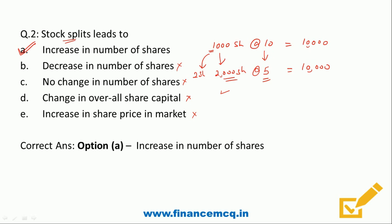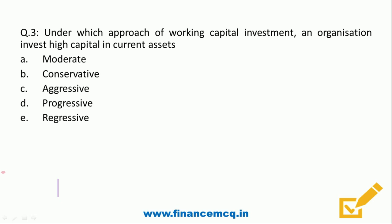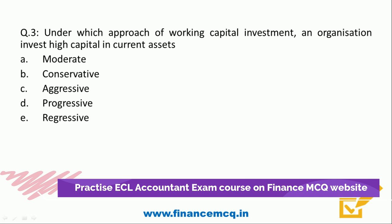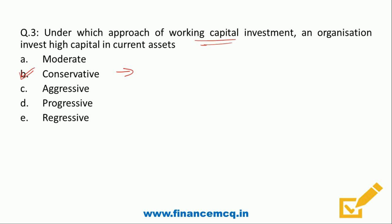Question 3: Under which approach of working capital investment does an organization invest high capital in current assets? Option A: Moderate, Option B: Conservative, Option C: Aggressive, Option D: Progressive, Option E: Regressive. Under the conservative method, we have high working capital investment — credit policies are very liberal and we maintain high cash balance to pay off current liabilities. So Option B, conservative, is the correct answer.